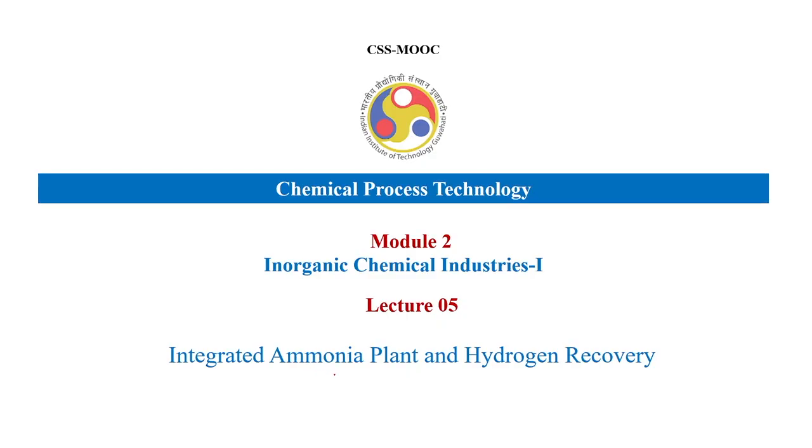Welcome back students. We were covering our inorganic chemical industries, Part 1, and in that we were covering the ammonia synthesis. We saw the reactor-specific configuration and also the reactions and thermodynamics involved. Now we move ahead to see the process configuration. In this lecture we will see an integrated ammonia plant and also how hydrogen is recovered, because nowadays hydrogen is a very precious gas and cannot be thrown away.